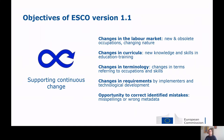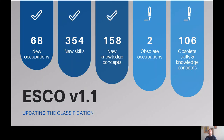ESCO version 1.1 is mainly divided into two strands: content update and the quality review. When it comes to the content update, many new concepts have been introduced in ESCO: 68 new occupations, 354 new skills, 158 knowledge concepts. But also some concepts have been made obsolete as they might no longer fit within the classifications or are not relevant in the labor market.